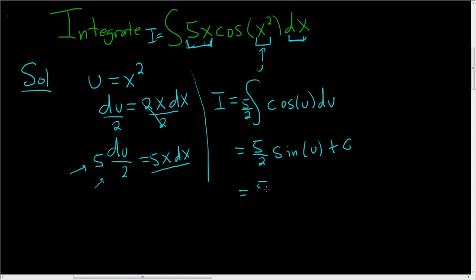And so here you get 5 halves sine. And then what was u? U was x squared. So you just plug it back in, x squared plus a constant. Pretty easy problem. I hope this helps.